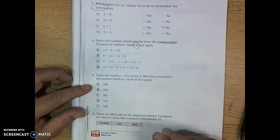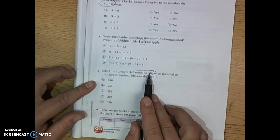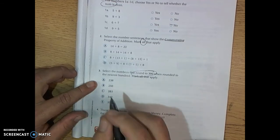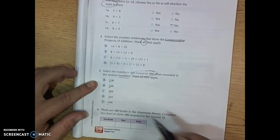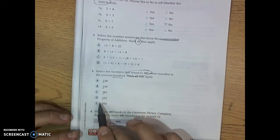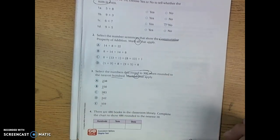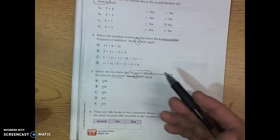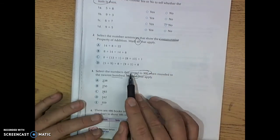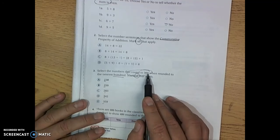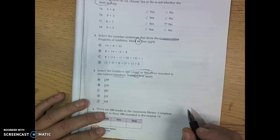Look at number 3. Select the numbers that round to 300 when rounded to the nearest 100. Make sure you're paying attention. The hundreds place is the one that's the farthest to the left here in these problems. Mark all that apply. Make sure that you're reading the instructions carefully. On the test it'll look just like this once again but it may say round to 400 when rounded to the nearest 100 and the numbers will be a little bit different.